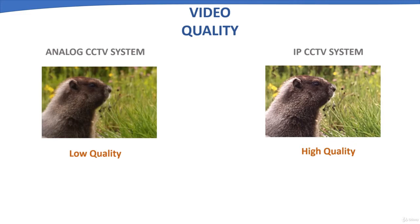Video quality: Analog CCTV cameras are of lower video quality in terms of TV lines or VGA quality, whereas IP CCTV cameras are of higher video quality — 1 megapixel, 2 megapixel, 5 megapixel or even higher. Hence the video quality of IP CCTV systems is superior compared to analog CCTV systems.